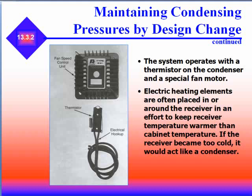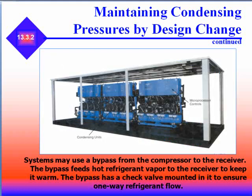The system operates with a thermistor on the condenser and a special fan motor. Electric heating elements are often placed around the receiver to keep it warmer than the ambient temperature. If the receiver became too cold, it would act like a condenser. Systems may also use a bypass from the compressor to the receiver — the bypass feeds hot refrigerant vapor to the receiver to keep it warm, and the bypass has a check valve to ensure one-way refrigerant flow.